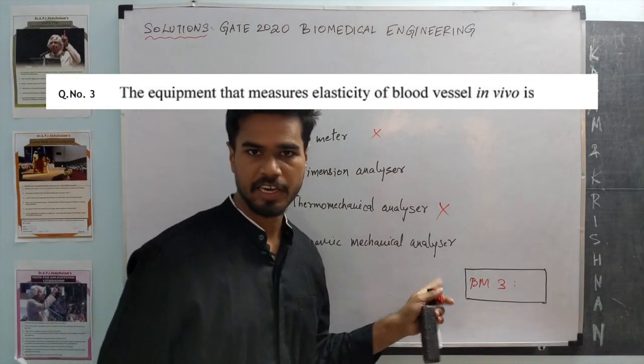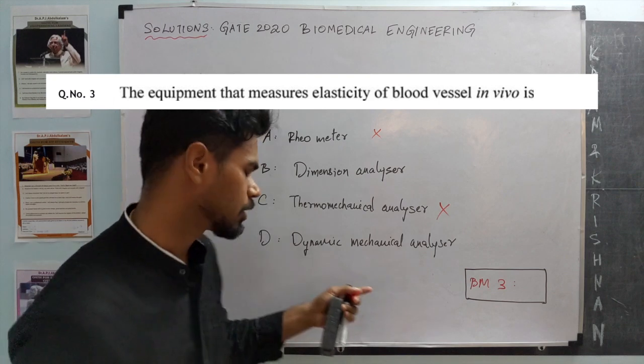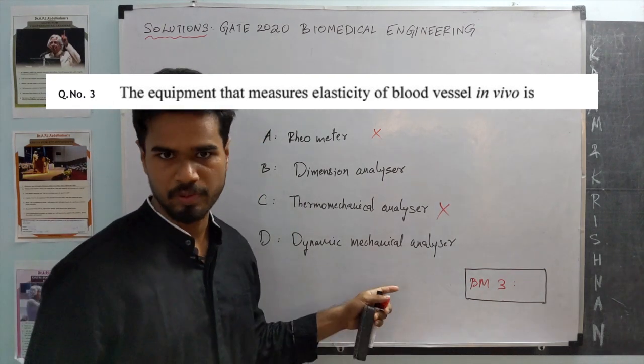Dynamical mechanical analyzer (DMA) is used to measure viscoelastic properties, mostly of polymers. But again, this is not useful in vivo.